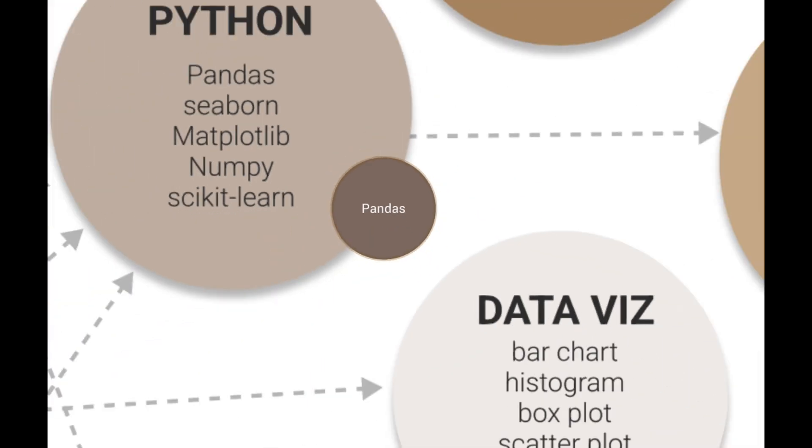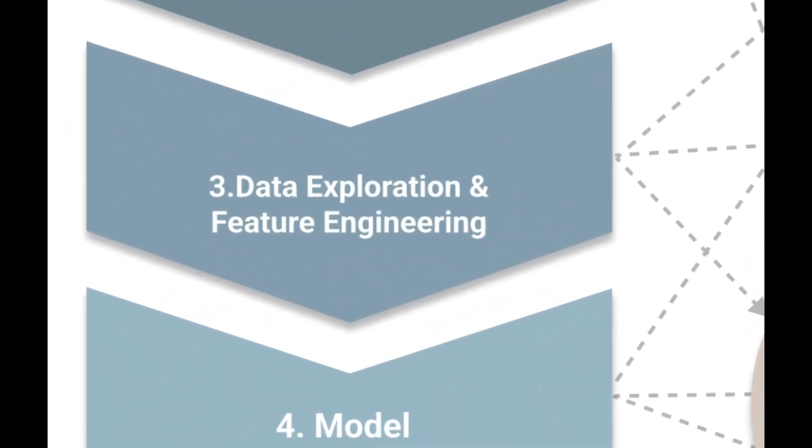The third step is data exploration, also known as EDA exploratory data analysis, which reveals hidden characteristics and patterns in a dataset. It is usually achieved by data visualization and followed by feature engineering to transform data based on the outcome of data exploration.